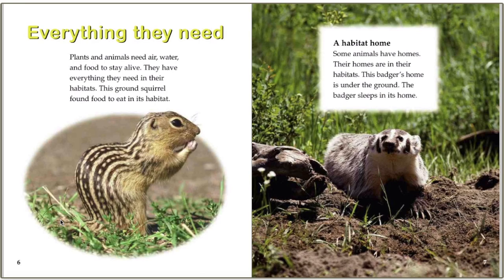It says that plants and animals need air, water, and food to stay alive. They have everything they need in their habitats. This ground squirrel found food to eat in its habitat. Some animals have homes in their habitats — this badger's home is underground and the badger sleeps in its home. So from reading those two pages we found out that a ground squirrel and a badger both live in the grassland habitat.